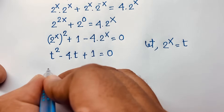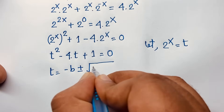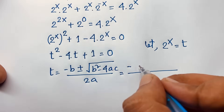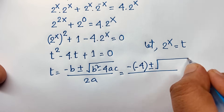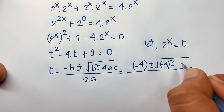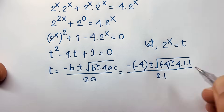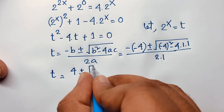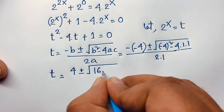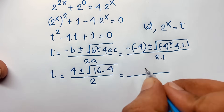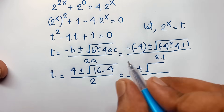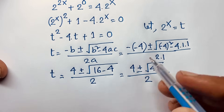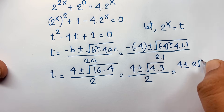Now, t is equal to what? We know that t equals negative b plus or minus square root of b squared minus 4ac, over 2a. Here a is 1, b is 4, and c is also 1. So t equals 4 plus or minus square root of 16 minus 4, over 2. That gives us 4 plus or minus square root of 12, over 2. Since 12 equals 4 times 3, the square root of 12 is 2 square root 3. So t equals 4 plus or minus 2 square root 3, over 2.